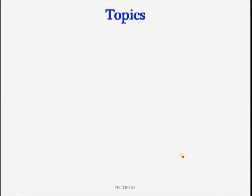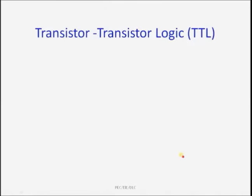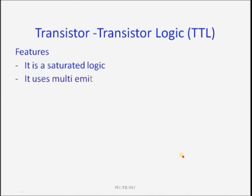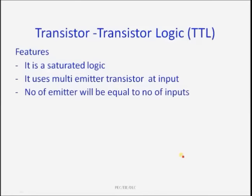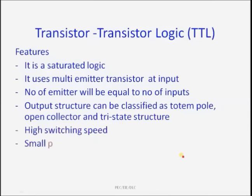The topics covered in this presentation are transistor-transistor logic and comparison between totem pole and open collector output. Features of transistor-transistor logic are: it is a saturated logic, meaning the transistor operates in either saturated state or cutoff state. It uses a multi-emitter transistor at input, so there is no need for a diode. The number of emitters equals the number of inputs. Output structure can be classified as totem pole, open collector, and tri-state. It has high switching speed, small propagation delay, and a fan-out of 10.